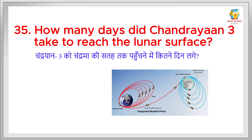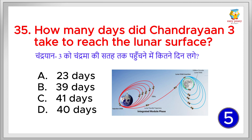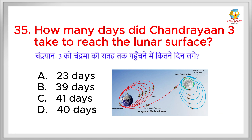How many days did Chandrayaan 3 take to reach the lunar surface? Chandrayaan 3 ko chandrama ki satah tak pahunchne mein kitne din lagay? The right answer is 40 days.